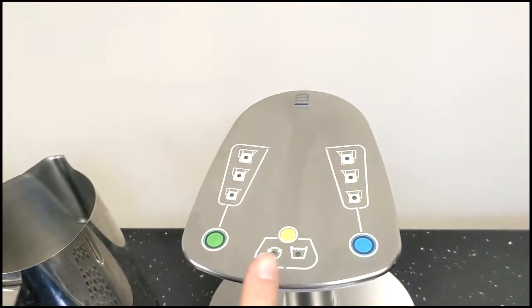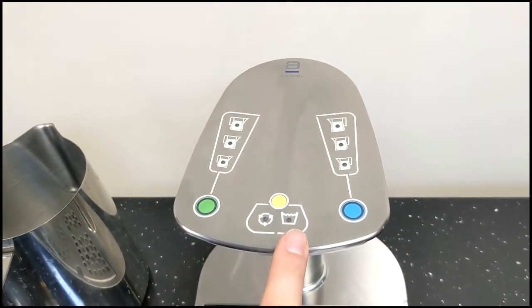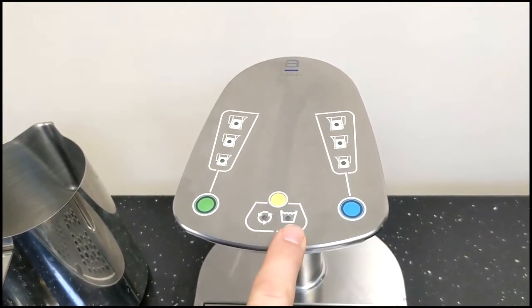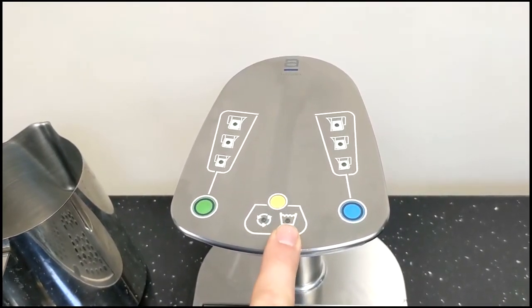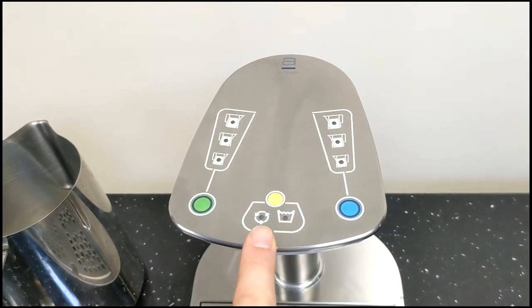You have two dispense sides, the green and the blue dispense buttons, and the center button yellow for dispensing. Indicators on either side of the button.